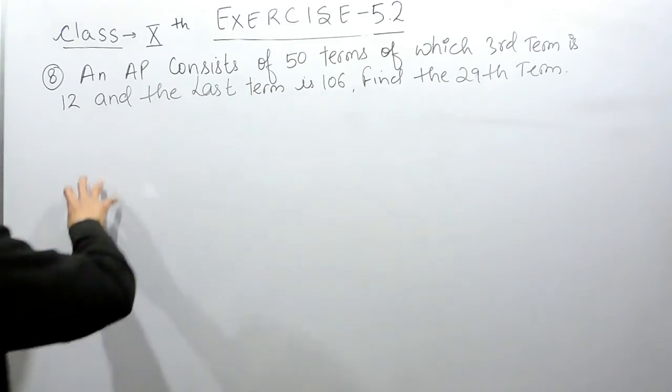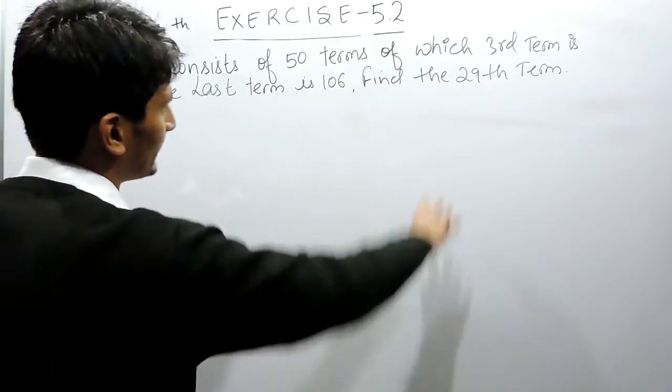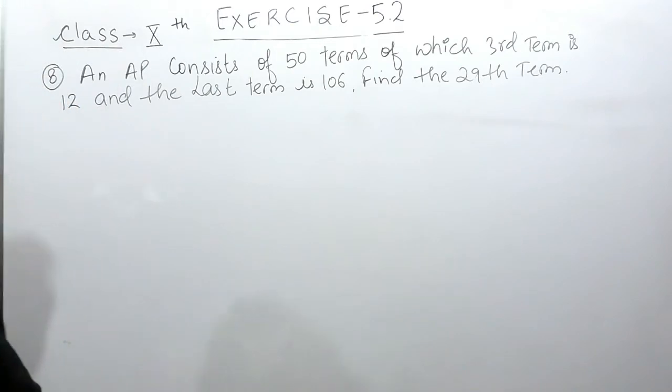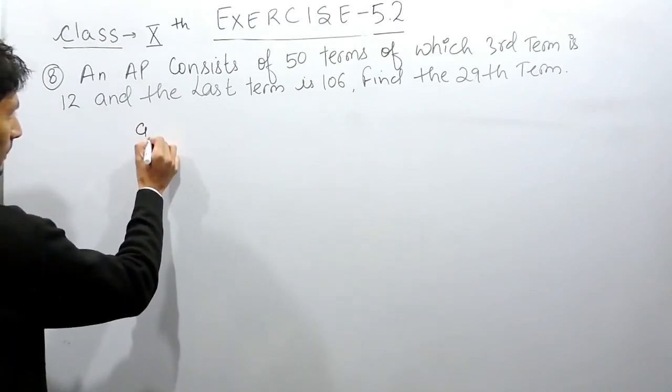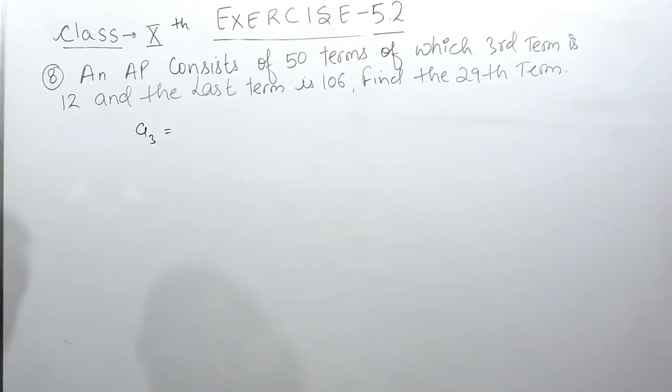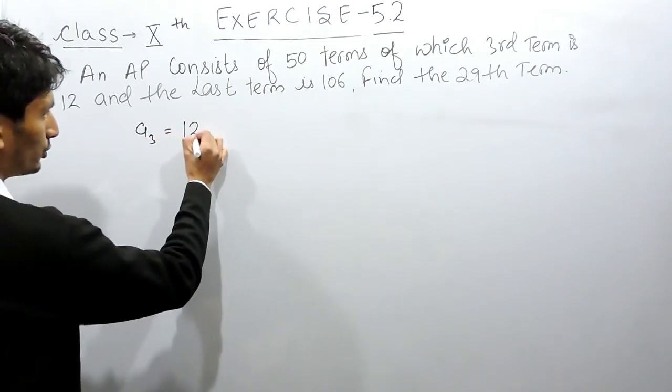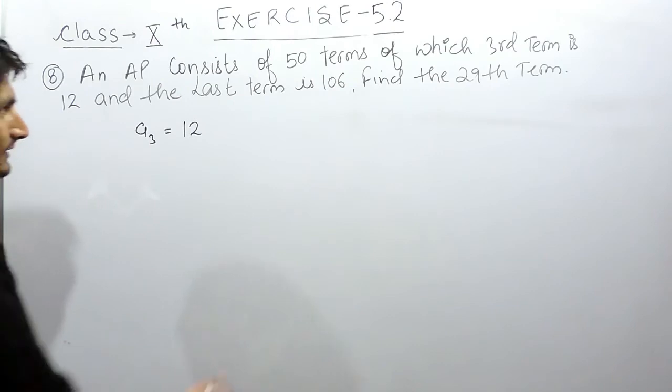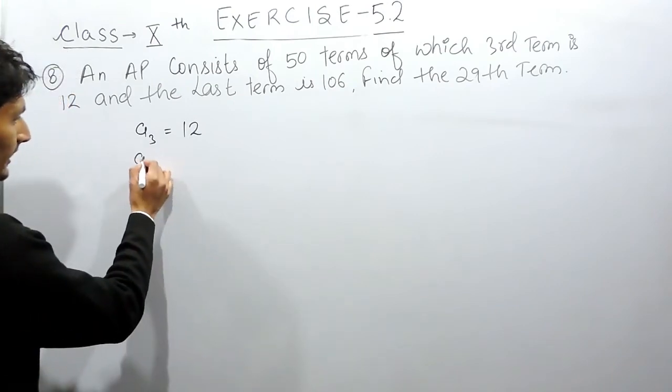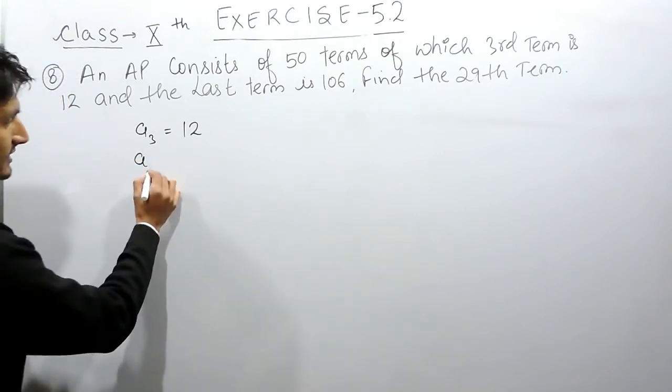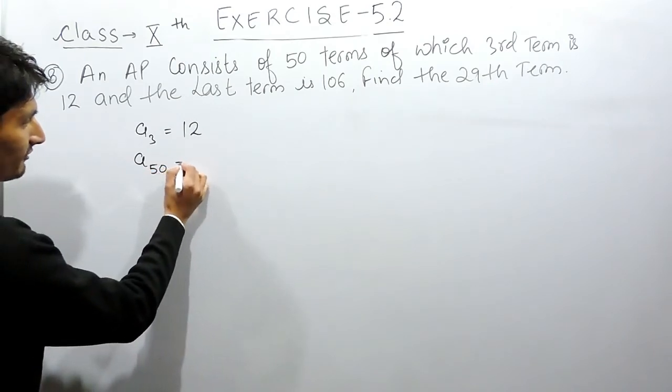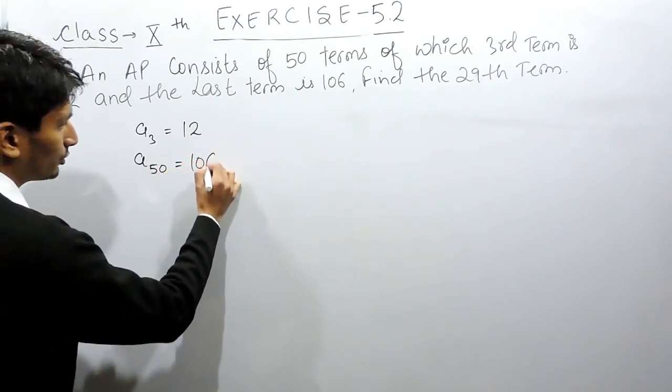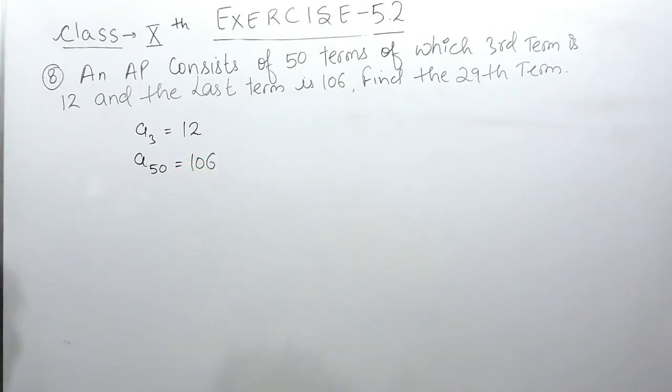So in this case there are 50 terms in the AP, of which the third term is 12. So the third term is given to you as 12, and the last term, since there are 50 terms, obviously the last term must be the 50th term and that is given to you as 106.